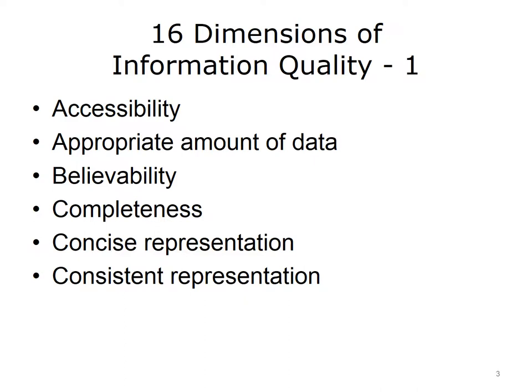Completeness: the extent to which data is not missing and is of sufficient breadth and depth for the task at hand. The completeness dimension can be examined from a number of perspectives. Concise representation: the extent to which data is compactly represented. From a logical perspective, this has direct impact on performance issues such as storage and processing time, but simplicity of representation can also influence data accuracy. Consistent representation: the extent to which data is represented in the same format, which supports consistent interpretation and application of the information.